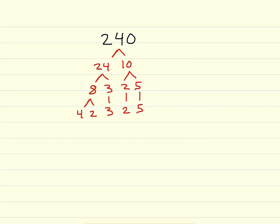4 is composite, and that breaks down into 2 times 2. Let's bring down all of our other prime numbers down to the same level.